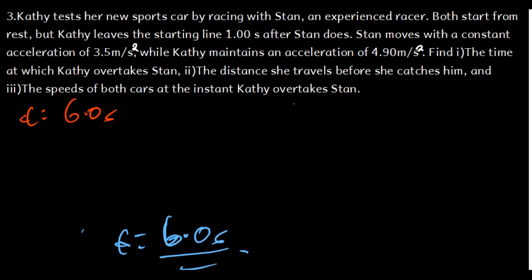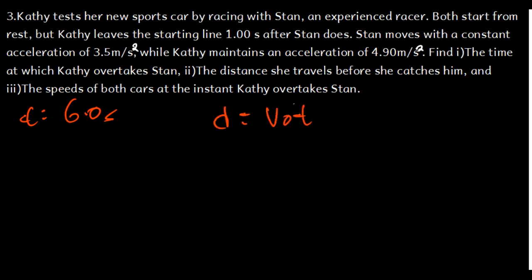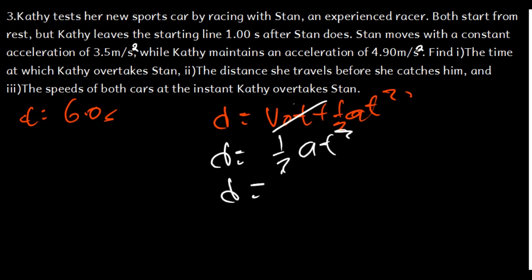Part B asks for the distance Kathy travels before she catches Sten. Since the initial velocity is zero, the formula is D = ½aT². For Kathy, the acceleration is 4.9 m/s² and we use Kathy's elapsed time of T − 1 = 6 − 1 = 5 seconds.